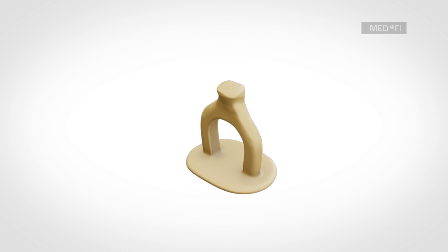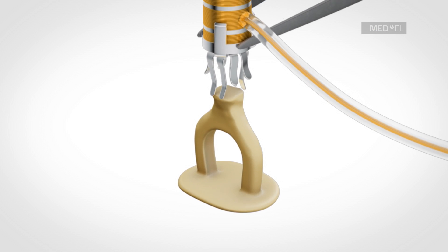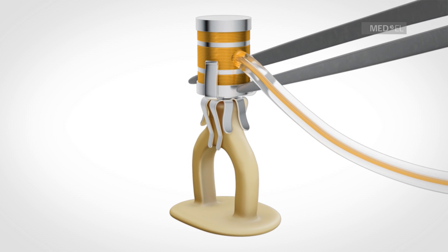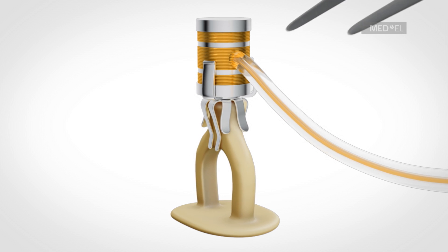The vibroplasty clip coupler is for placement on the head of the stapes. The orientation of the legs must be observed. The shorter legs are placed over the crura and the longer legs parallel to the stapes.